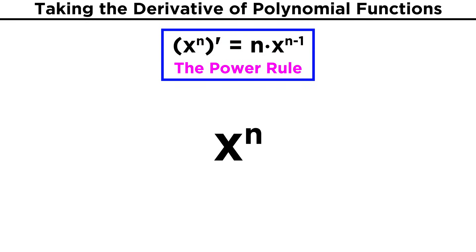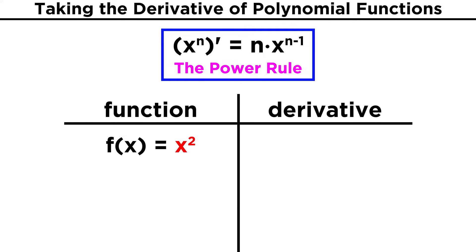As we said, the power rule tells us that in order to take the derivative of some function involving a positive integer exponent, we just pull the exponent down to become a coefficient, and then reduce the exponent by one. So the derivative of x squared is two times x to the one, or simply two x.